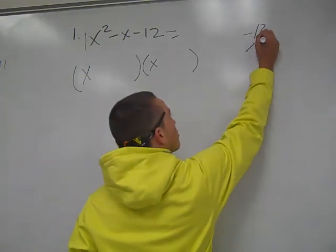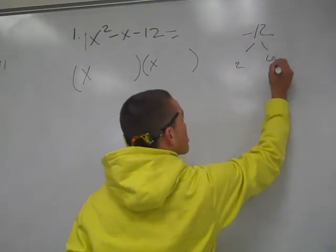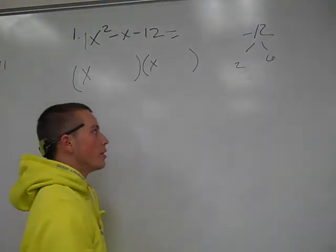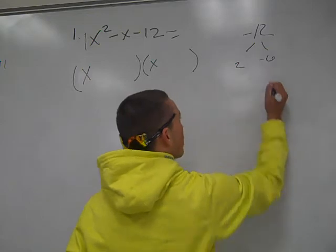The factors of 12 is 2 and 6, correct? No, it's 6. No. It's 2 and negative 6.